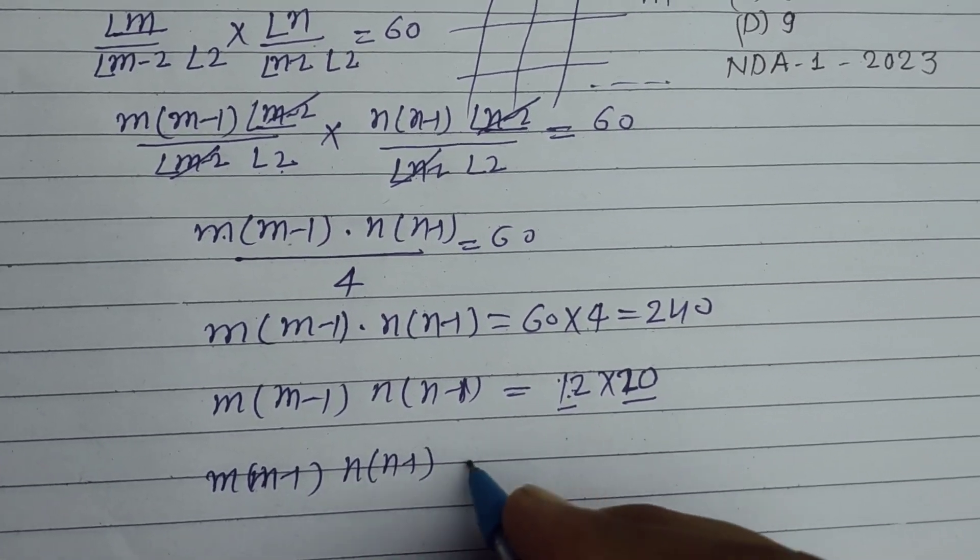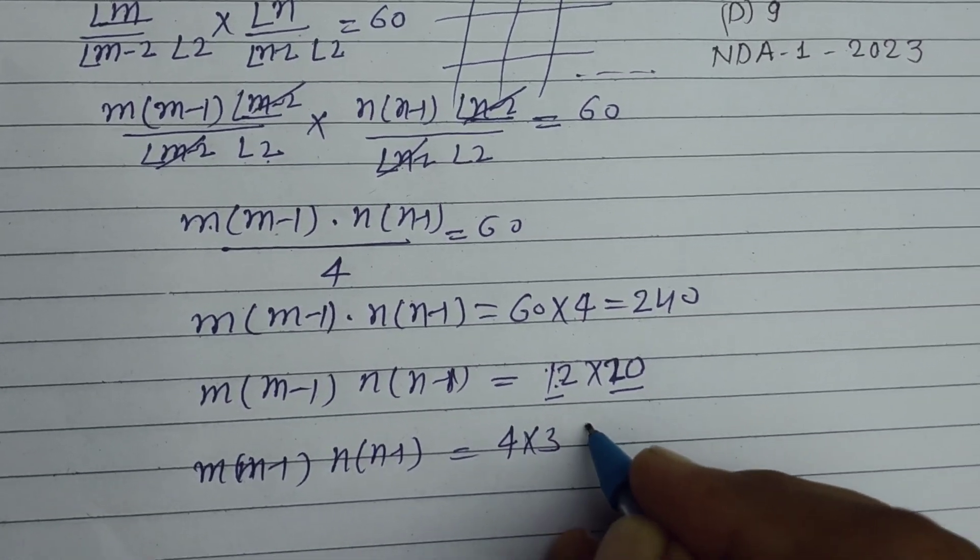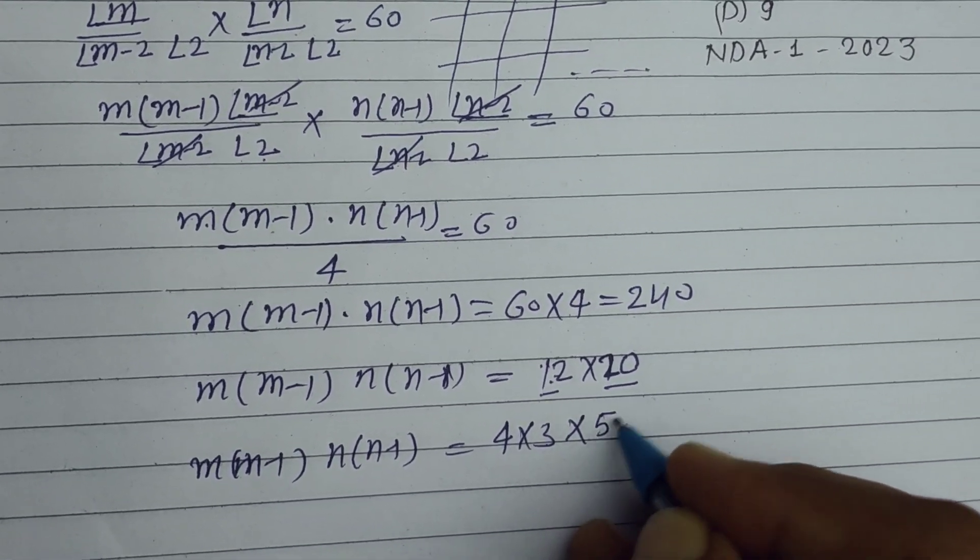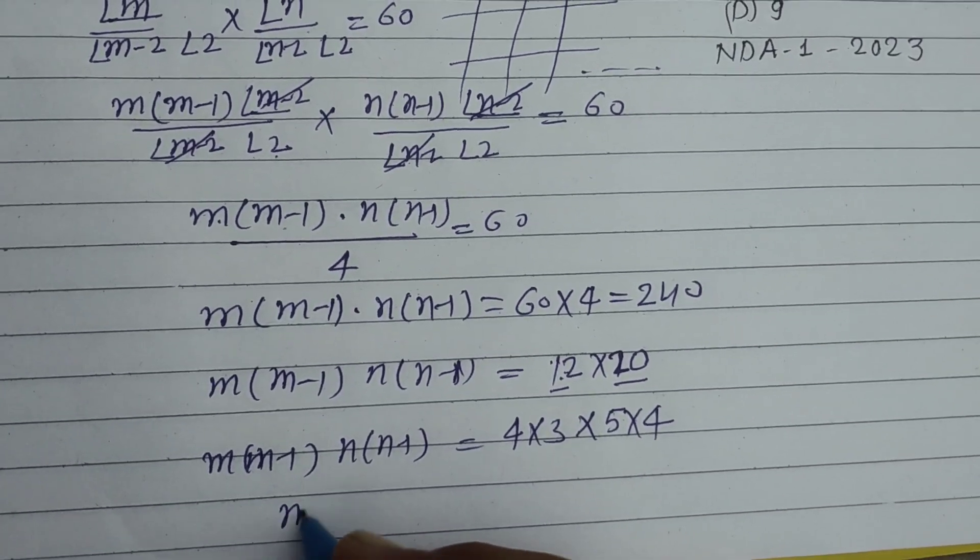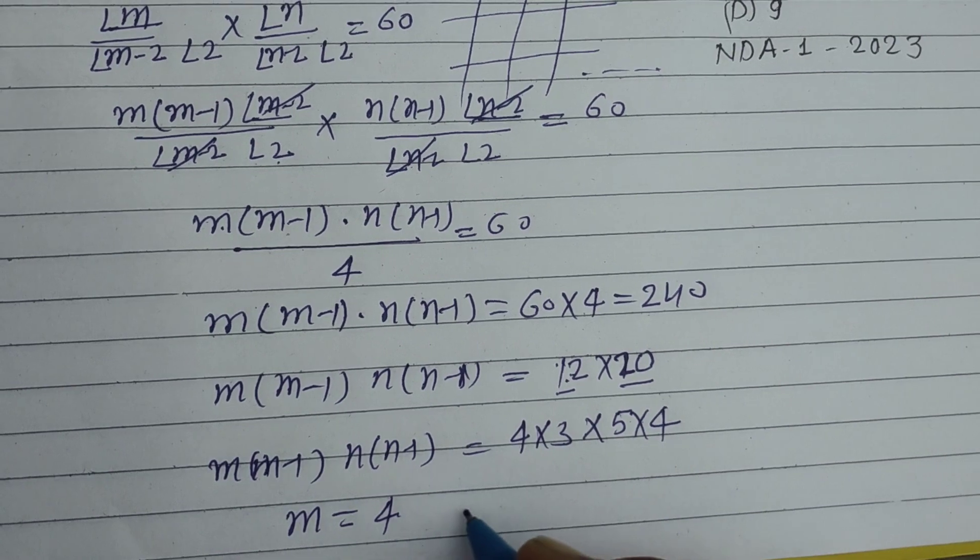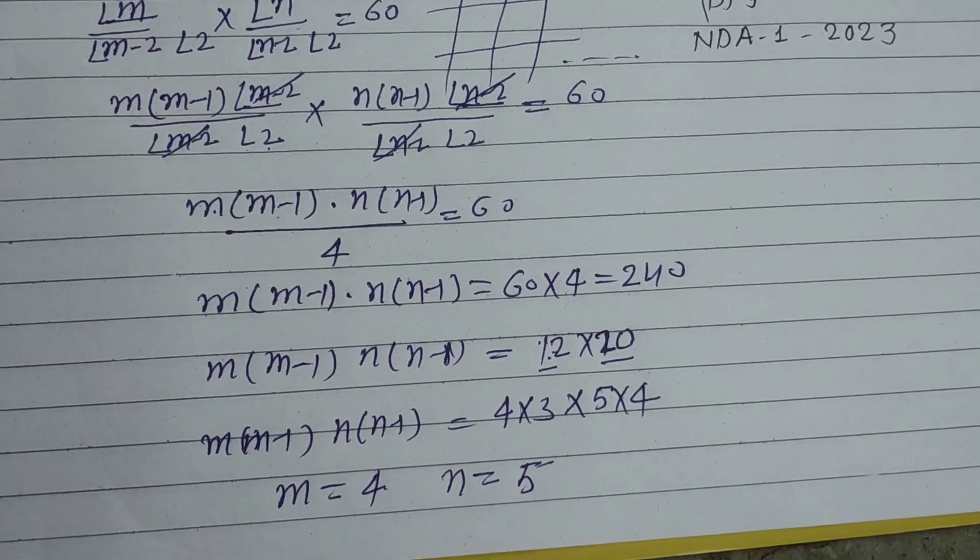12 can be written as 4 into 3, and 20 can be written as 5 into 4. So here m will be 4 and n will be 5.